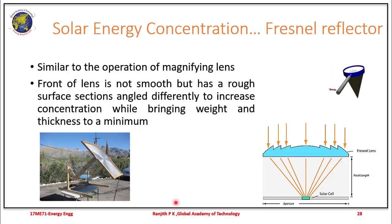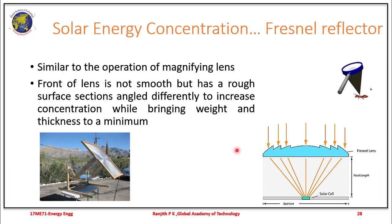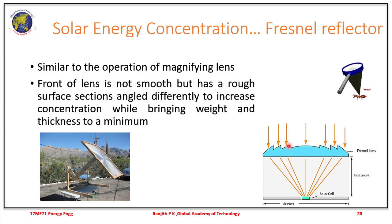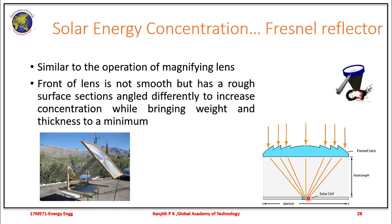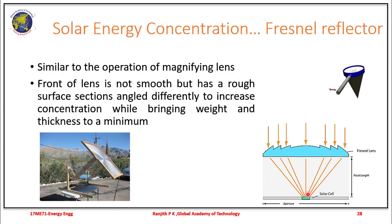The Fresnel reflector is very similar to the operation of a magnifying lens. The front of the lens is not smooth but is made into rough sections angled differently to increase concentration, while the thickness and weight are kept to a minimum. The lens ensures that the solar radiation incident is concentrated and made incident onto a single solar cell, with the gap between the Fresnel lens and the solar cell kept at the focal length.